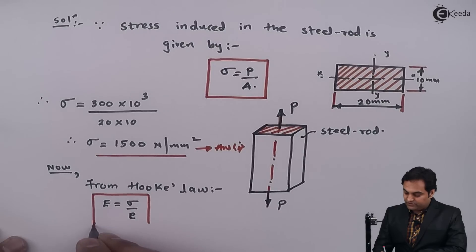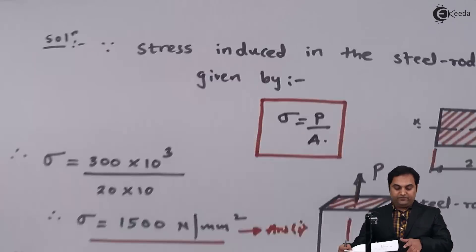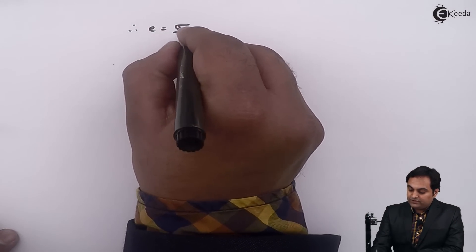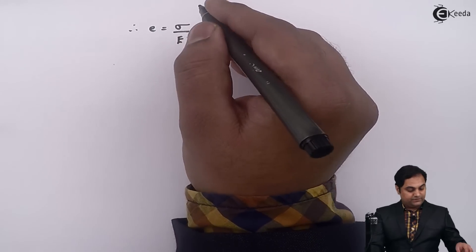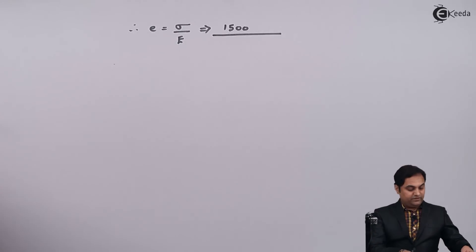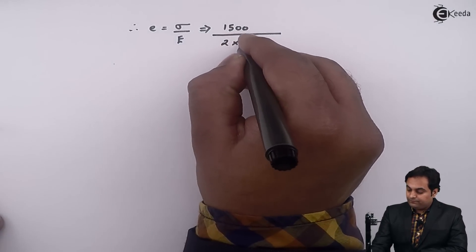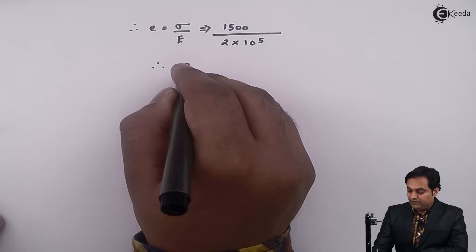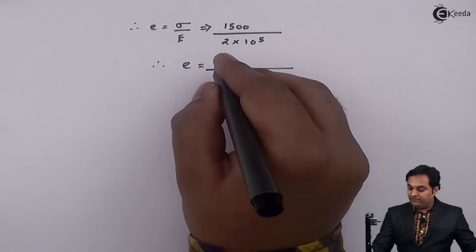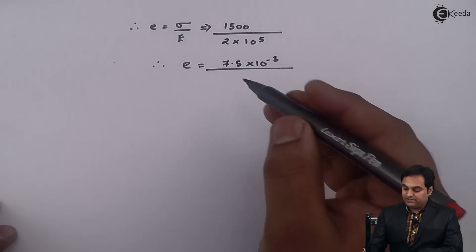Therefore, strain equals stress divided by Young's modulus E. Stress is 1500 N/mm² and Young's modulus is 2×10⁵ N/mm². From this, the value of strain comes out to be 7.5×10⁻³. This is our second answer.